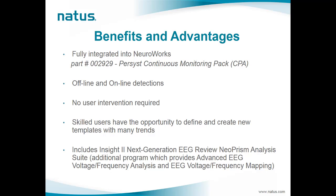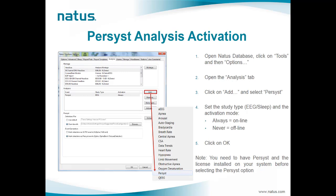No user intervention is required because NeuroWorks and Persyst use a predefined template which collects the main trends and analyses required in ICU. Users just need to activate and run the Persyst analysis, and the system will return the results either offline or in real time during recording. Skilled users also have the opportunity to define and create new custom templates by selecting trends from the complete list provided by Persyst. The Persyst continuous monitoring pack also includes the InsideOut application, which provides advanced EEG voltage and frequency analysis and mapping tools.